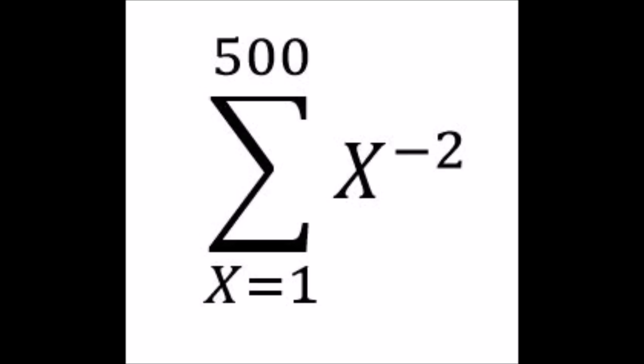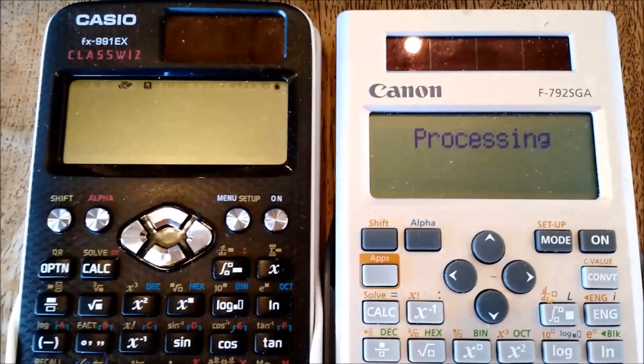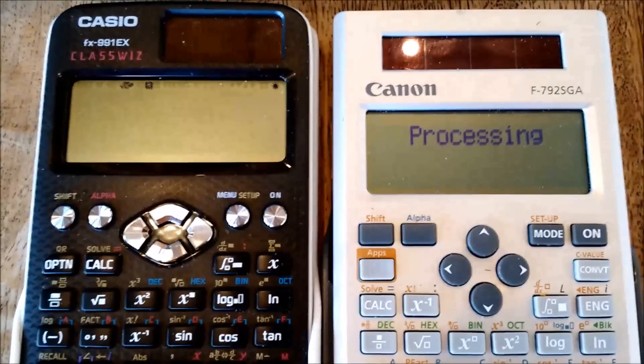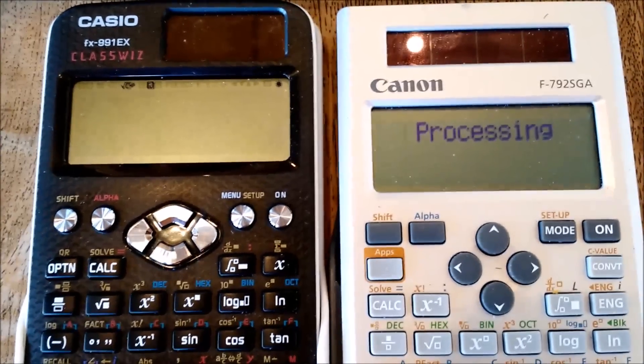Next I'm going to sum up all the x to the negative 2 power from x equals 1 to 500, and the calculation has just started. You're going to notice that this calculation, as opposed to the four others we've done previously, it's going to take a while for both calculators.